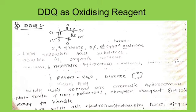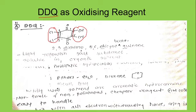What is DDQ? DDQ is a 2,3-dichloro-5,6-dichloro-benzoquinone compound. Remember that structure — it is always asked in MCQs: what is the structure of DDQ or the long form of DDQ? It is 2,3-dichloro-5,6-dichloro-benzoquinone.